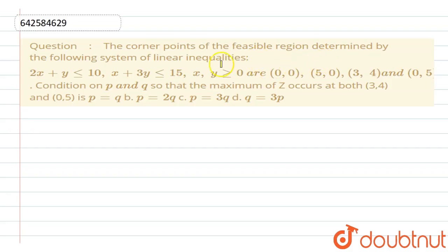Hello friends, so the question says: the corner points of the feasible region determined by the following system of linear inequalities: 2x plus y less than or equal to 10, x plus 3y less than or equal to 15, xy greater than or equal to 0 are (0,0), (5,0), (3,4) and (0,5).